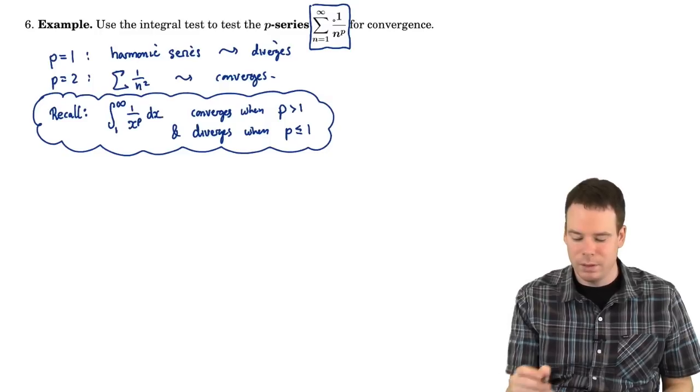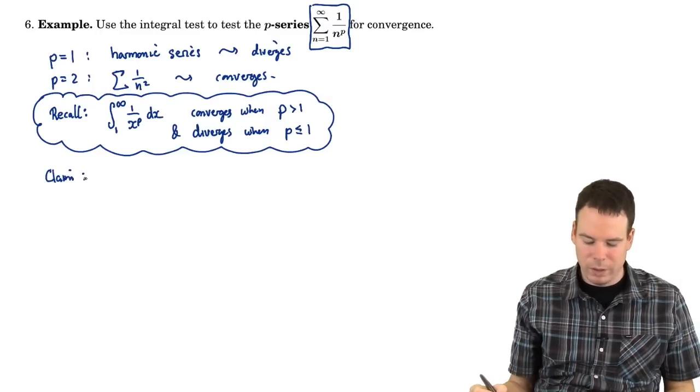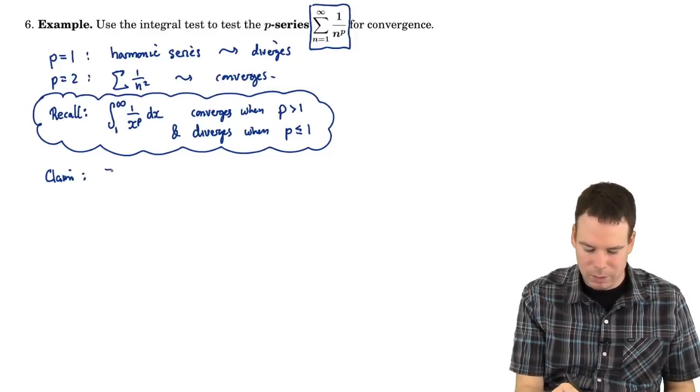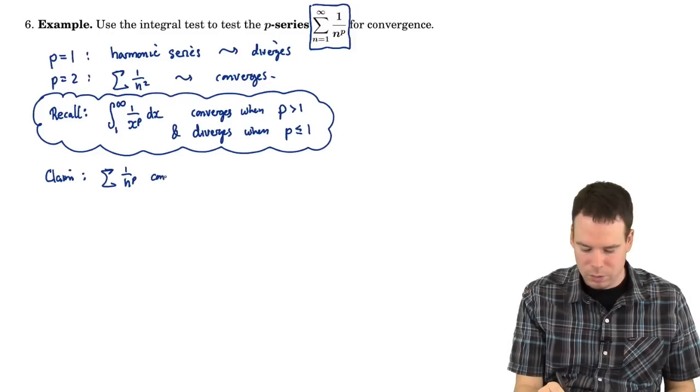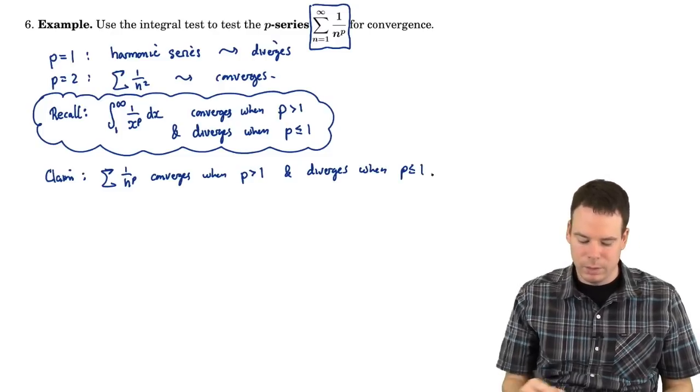Can we use that to answer the question about series? Well, you may say now it should be quite clear because we can make the comparison of this with the integral and we get our claim that the series 1 over n^p converges when p is bigger than 1 and diverges when p is less than or equal to 1. So that's our claim.